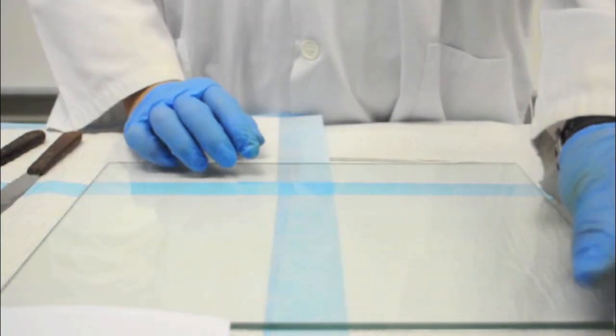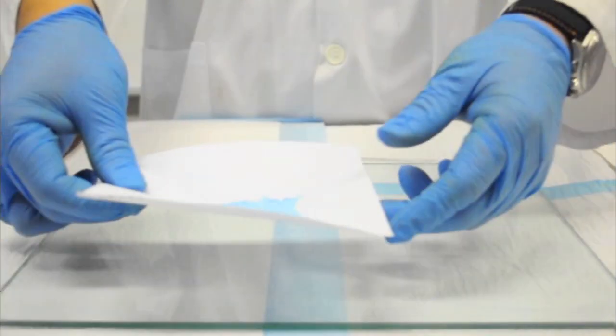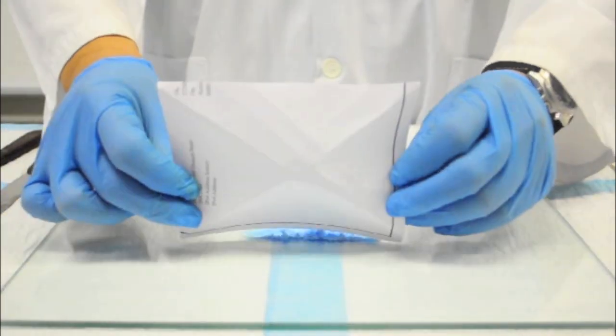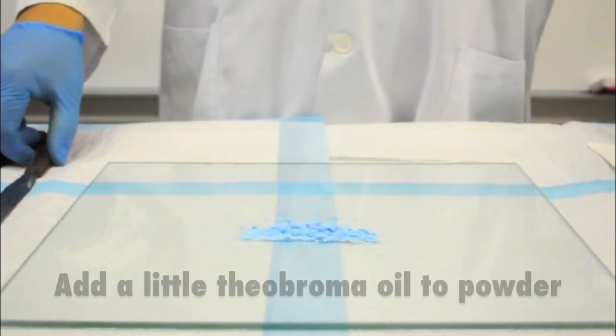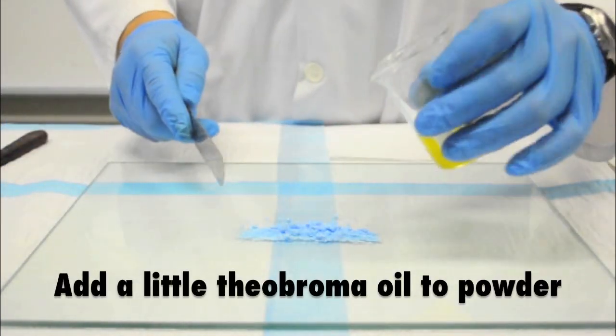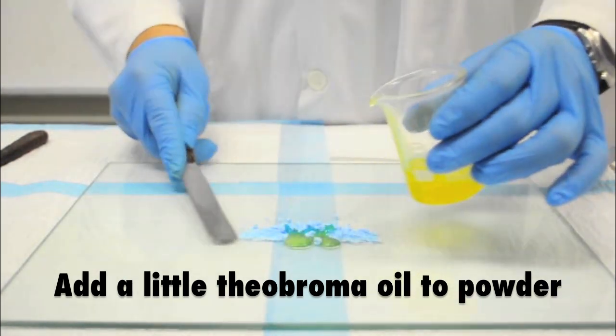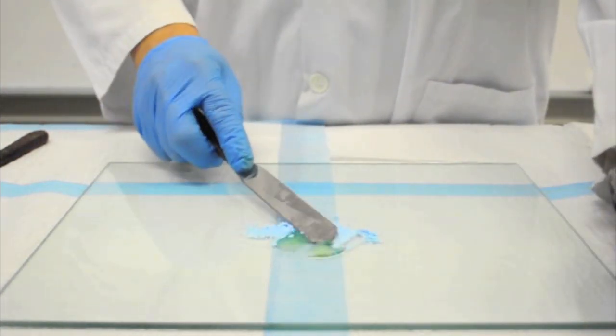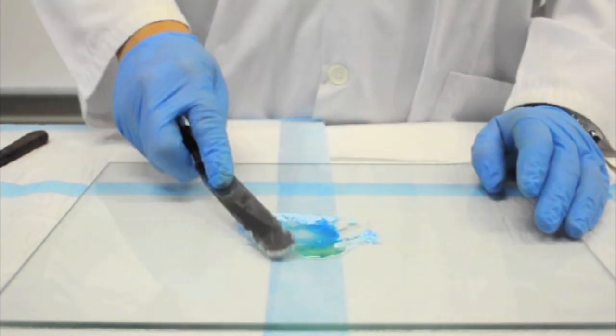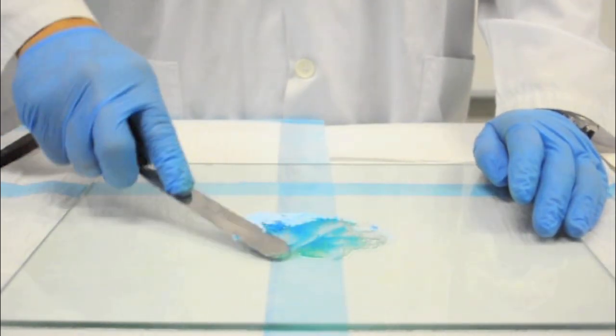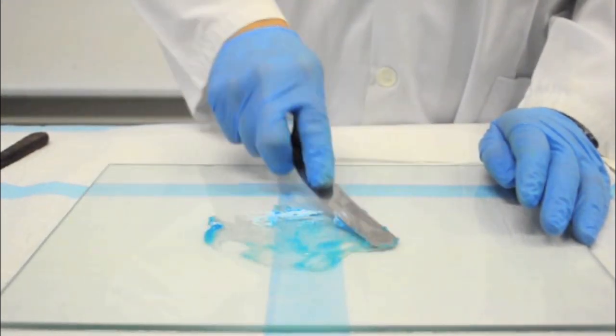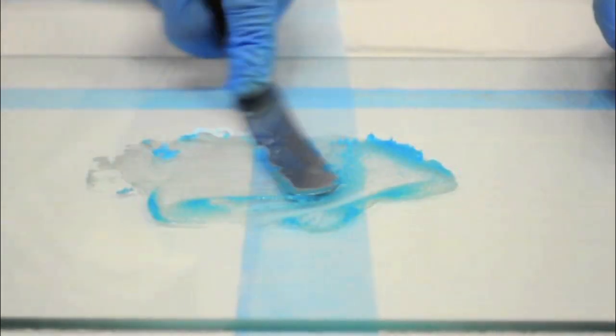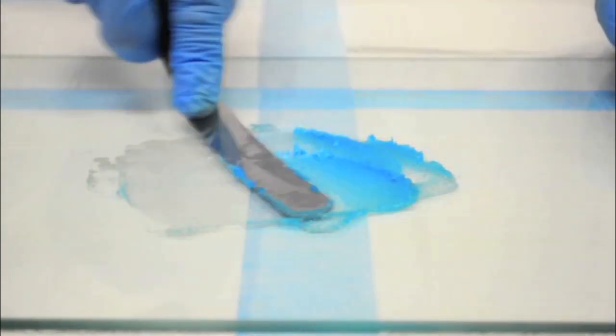So, what we need to do is to put all the copper sulfate onto a glass slab and then with a tiny amount of theobroma oil, you mix the ingredients in. Now, this is quite an important step to make sure that if there are any big particles, you actually smoothen it out. So, you keep mixing until you don't see any big particles inside.